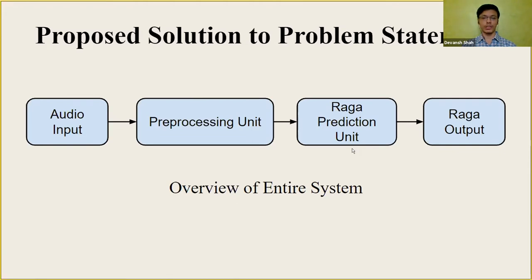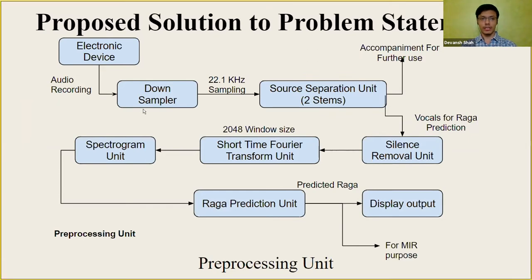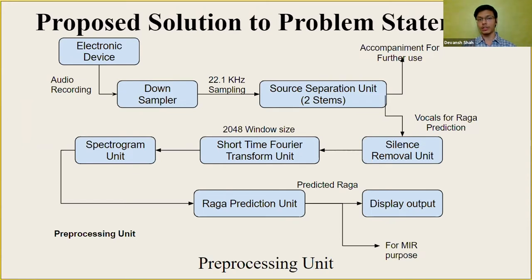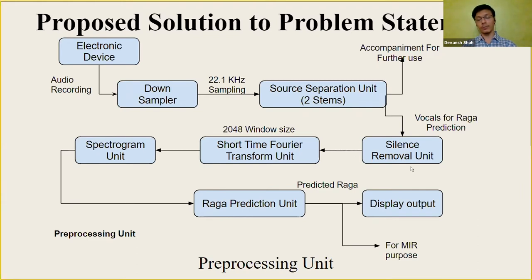Now let's take a deeper look at the preprocessing unit. We have some device which records audio, and first we downsample the audio to 22.1 kHz if the sampling frequency was greater. Then we pass it to the source separation unit — audio source separation is a completely different field, and it separates the vocals and instrumentals from a single audio. We adopted source separation because only the vocal part should be needed for identifying a Raga. Then there is a silence removal unit — while silences are important in music, we felt that having a model learn silences might not be the best idea, so we remove them.